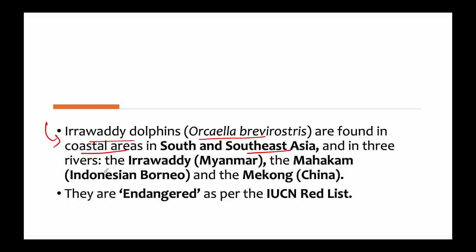There are three rivers where they are majorly found: the Irrawaddy in Myanmar, the Mahakam in Indonesia (Borneo), and the Mekong in China. Their status on the IUCN Red List is Endangered, so these are endangered species.